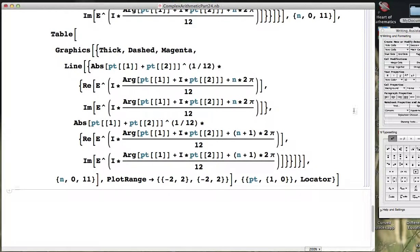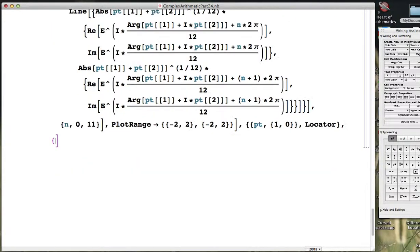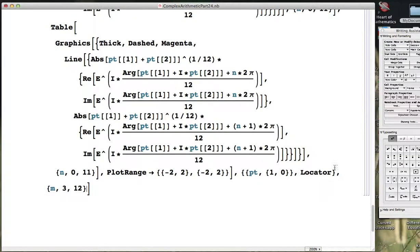I'd like to start this video by adding one extra bit of interest to this animation. Let's add an extra animation parameter m, starting at 2 going up to 12 and incrementing by 1.